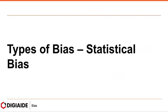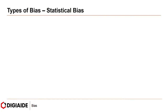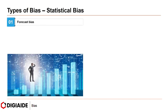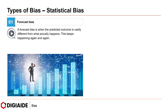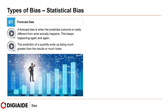Moving on to types of statistical bias. These entail, first, forecast bias. A forecast bias is when the predicted outcome is vastly different from what actually happens, and this keeps happening again and again. The prediction of a quantity ends up being much greater than the results, or much lower.